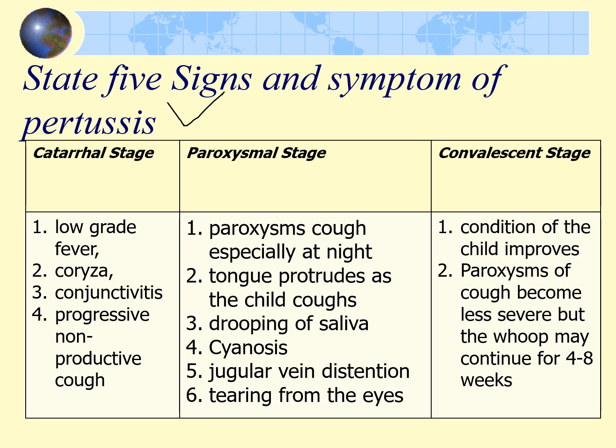During coughing episodes the child may protrude their tongue and even turn blue, which is cyanosis due to lack of oxygen. Pressure from coughing can distend the jugular vein and there may be tearing from the eyes. In the convalescent stage the child gradually improves; the cough becomes less intense although the characteristic whoop sound may persist for four to eight weeks.